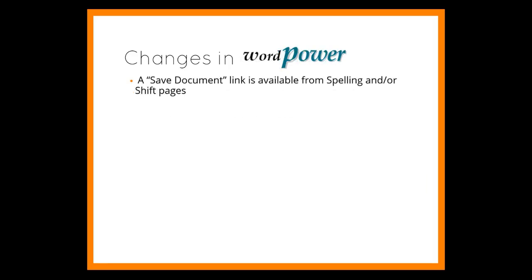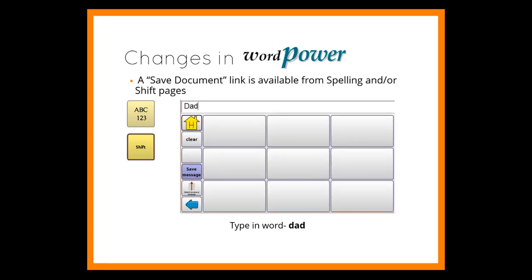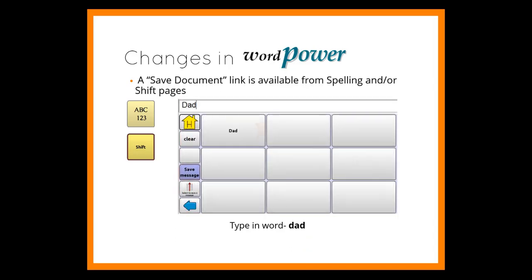A saved document link has been included on the spelling pages. You can access the button either from the keyboard link or a shift key when a keyboard is included on the home page — a great way to save a writing sample. Type a word, tap Save Document, tap Save Message, click OK to store the message in the speech display bar, and select the location. This can be a story in development or samples of someone's writing.